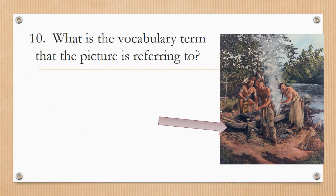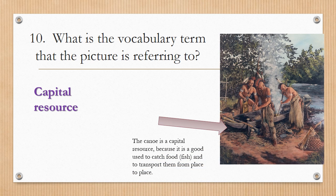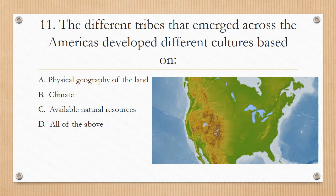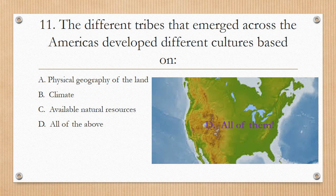Number ten: What is the vocabulary term that the picture is referring to — is it a capital resource, a natural resource, or a human resource? The canoe is a capital resource because it is a good used to catch food, catch fish, and transport the natives from place to place. Number eleven: The different tribes that emerged across the Americas developed different cultures based on which factor? The answer is D — all of them: the physical geography of the land, the climate, and the available natural resources.